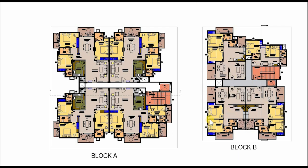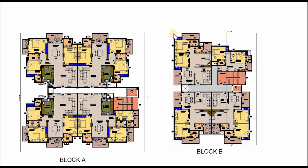When arranging units in a layout, it is important that all rooms get natural light and ventilation. As shown in the layout, 3 two-BHK units can be placed symmetrically — this is unit 1, 2nd, and 3rd. However, there is one apartment unit where the design has to be changed. It is important to get maximum natural light and ventilation in all major rooms such as bedrooms, dining, drawing, and kitchen.